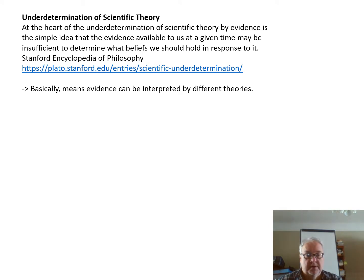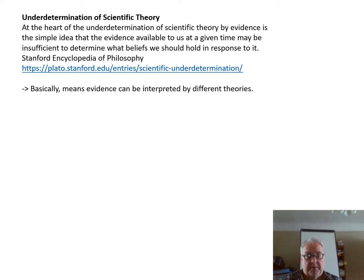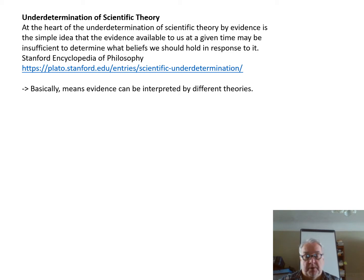The Stanford Encyclopedia of Philosophy explains underdetermination of scientific theory as follows: at the heart of the underdetermination of scientific theory by evidence is the simple idea that the evidence available to us at a given time may be insufficient to determine what belief we should hold in response to it. Basically, it means that evidence can be interpreted by different theories.